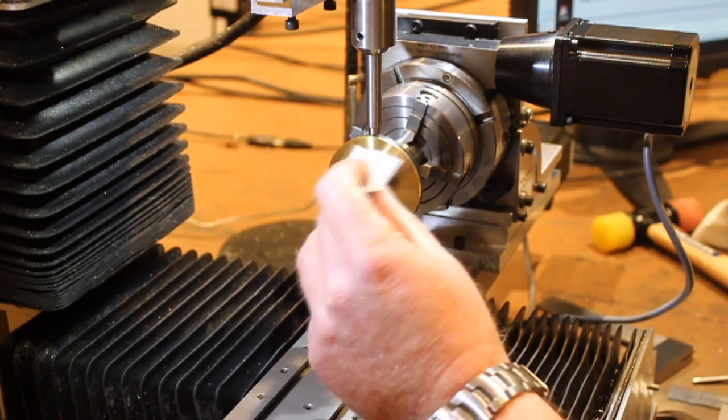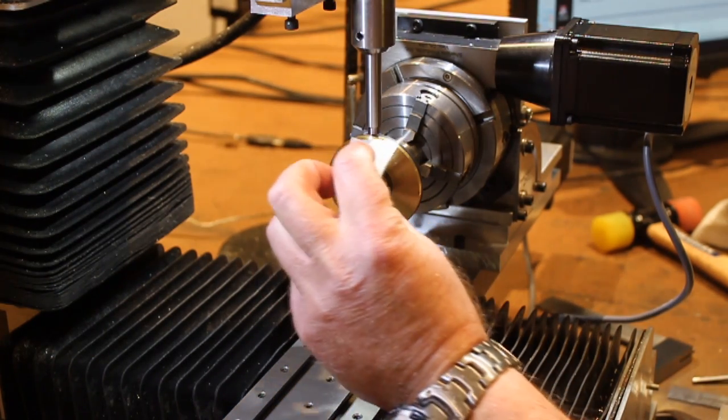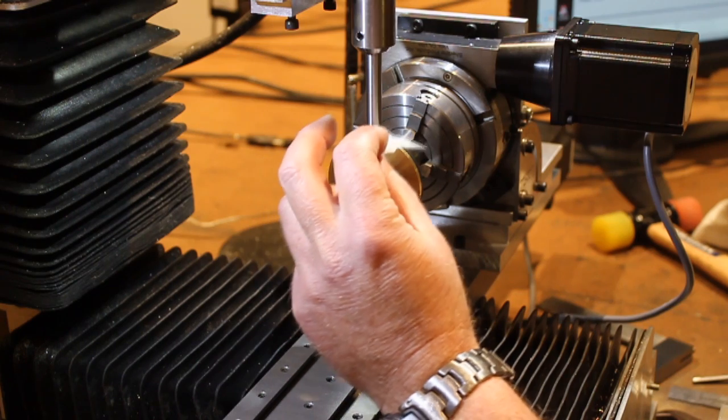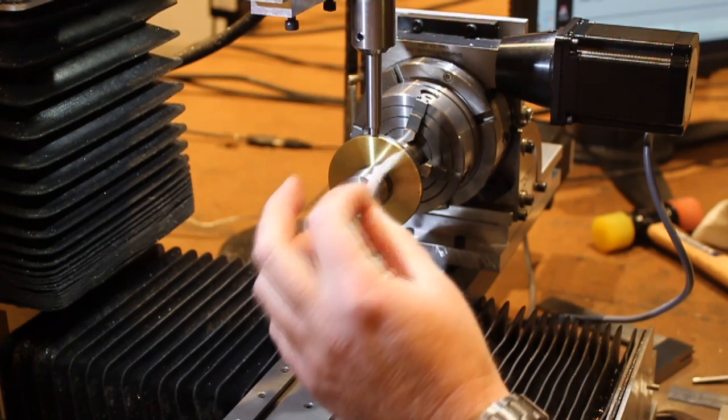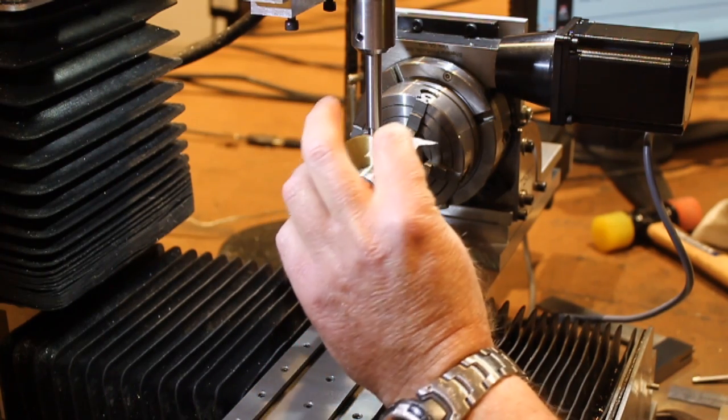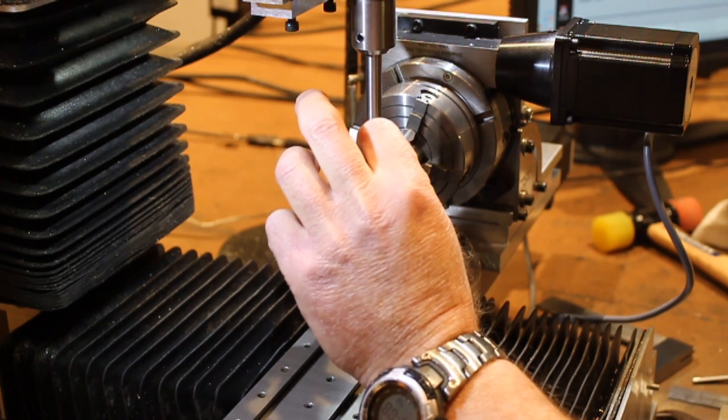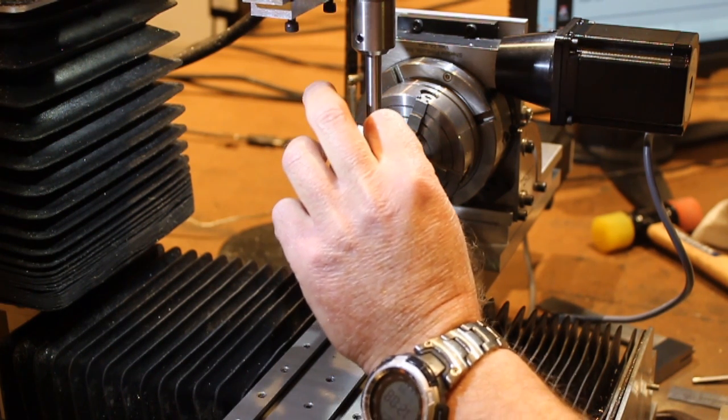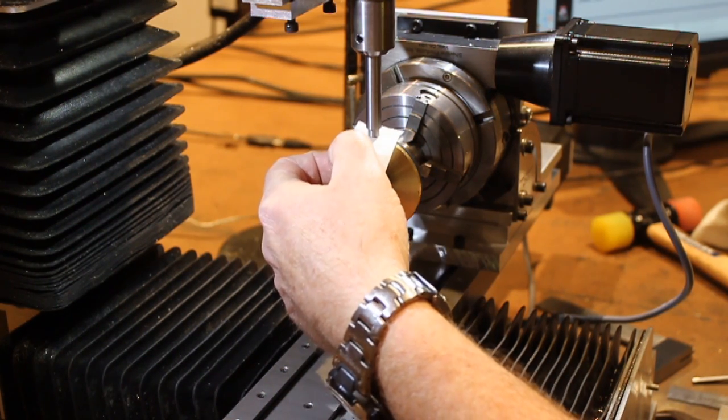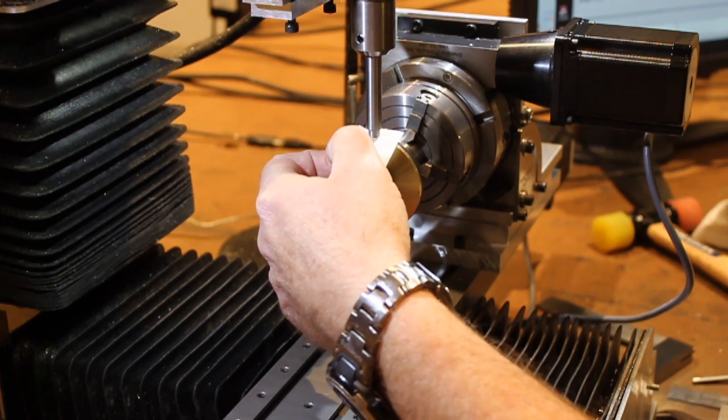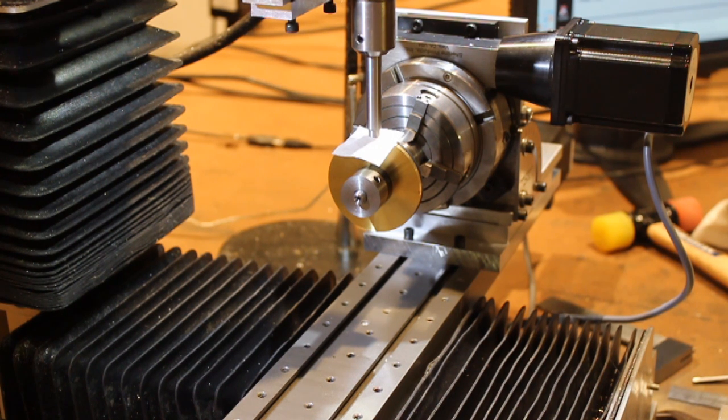Again, using the technique that I showed you before, by using a piece of paper that I know is 0.004 inches thickness, I'm just going to bring this down until the paper tensions just right there, and now I can zero my z-axis.